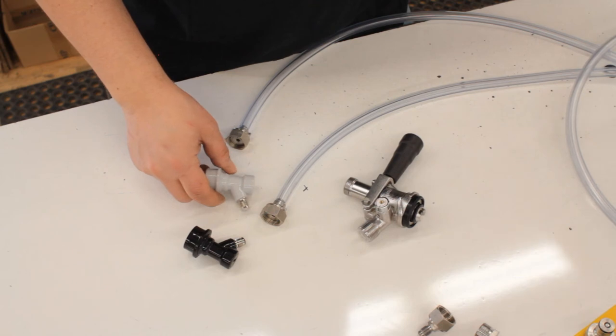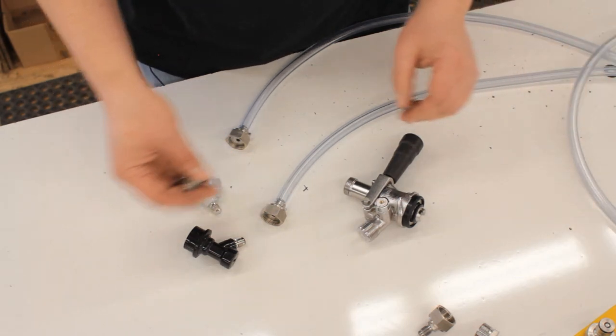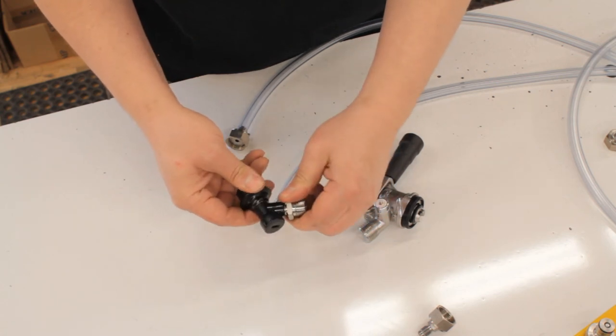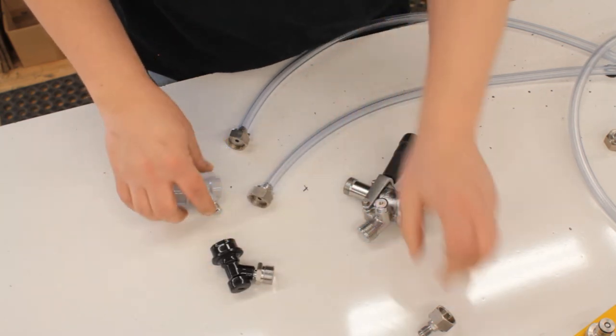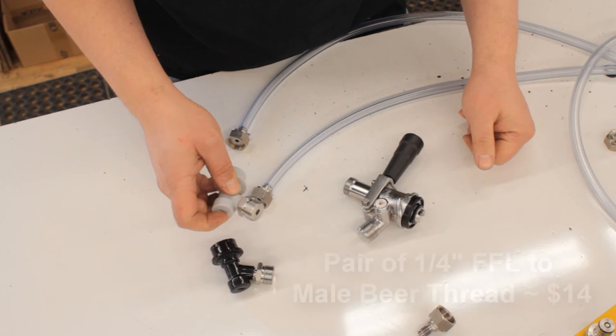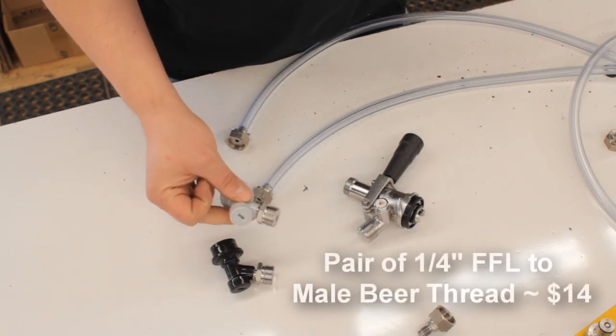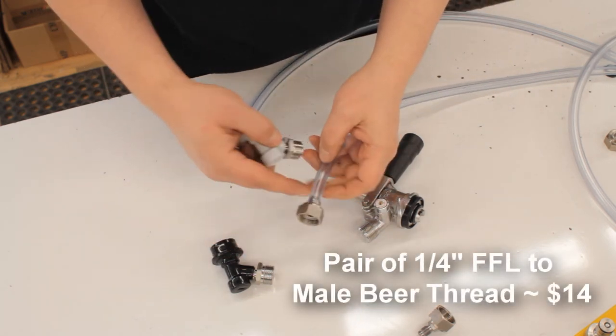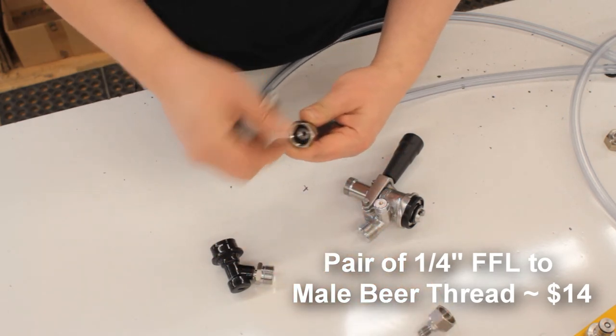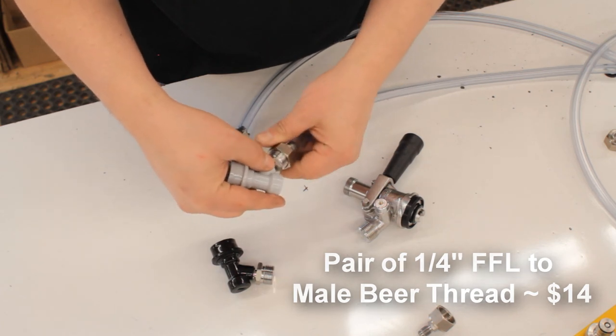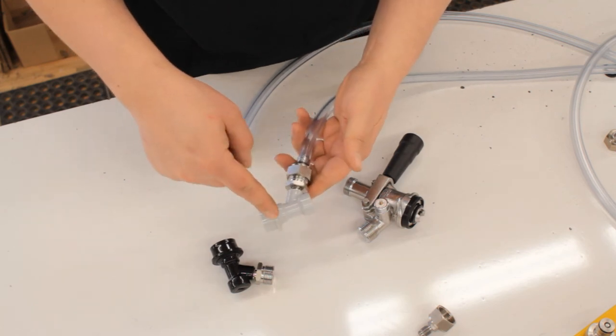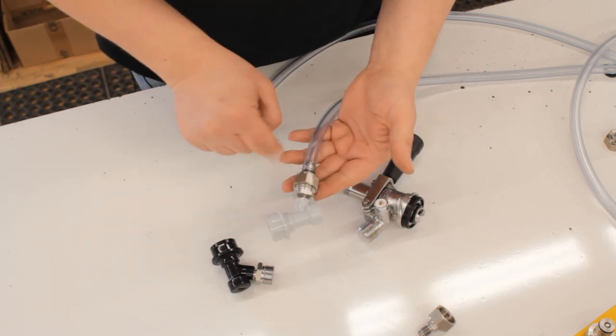Now the non-destructive way of doing it is to equip your ball lock or pin lock quick disconnects for homebrew with these adapter fittings. They're called female flare to male beer thread adapters, and once you have this on here you don't have to cut the lines on your commercial kegerator. You just put the gasket in place and you thread this on, and now you have ball lock homebrew on the otherwise commercial lines.